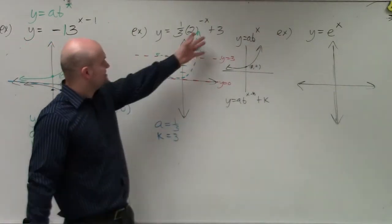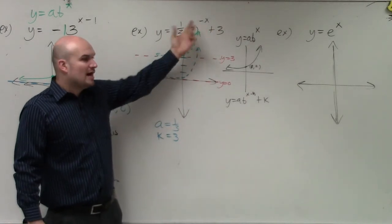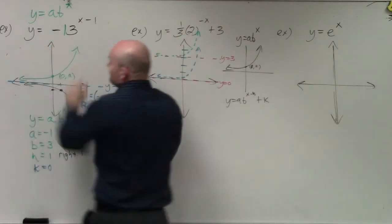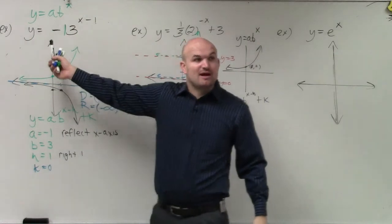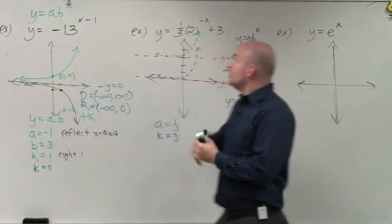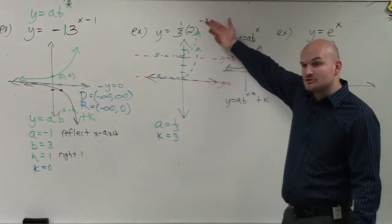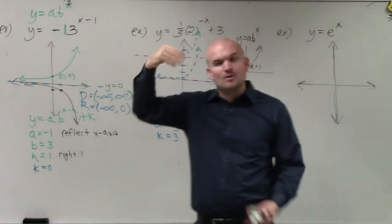Then the last thing is this negative x. Now, if you remember, when we multiply by a negative on the outside, that reflected the graph about the x-axis. So if you're multiplying by a negative on the inside of the function, that's going to reflect about the y-axis.